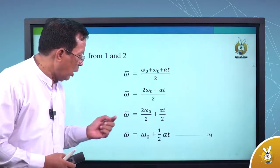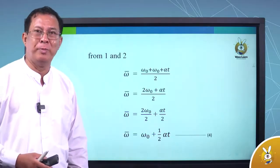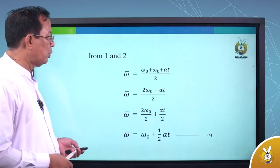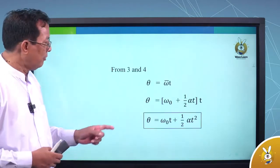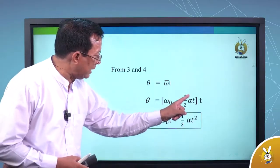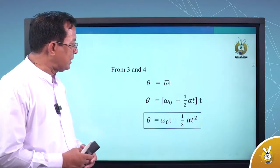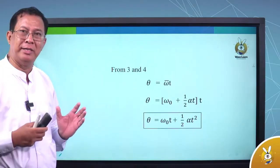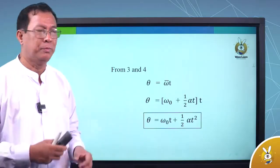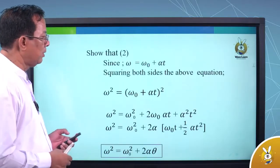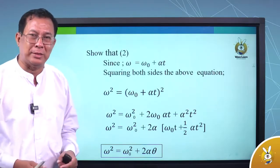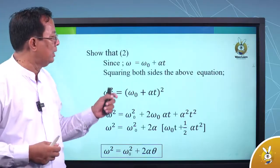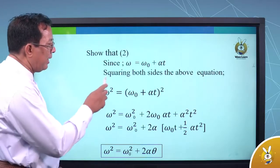To achieve omega-naught plus half alpha t — equation number four. From equations three and four: theta equal to omega-bar times t. We have equation number four: omega-naught plus half alpha t into t. Theta equal to omega-naught t plus half alpha t squared. We have equation number four. Omega equal to omega-naught plus alpha t — that is equation number one.